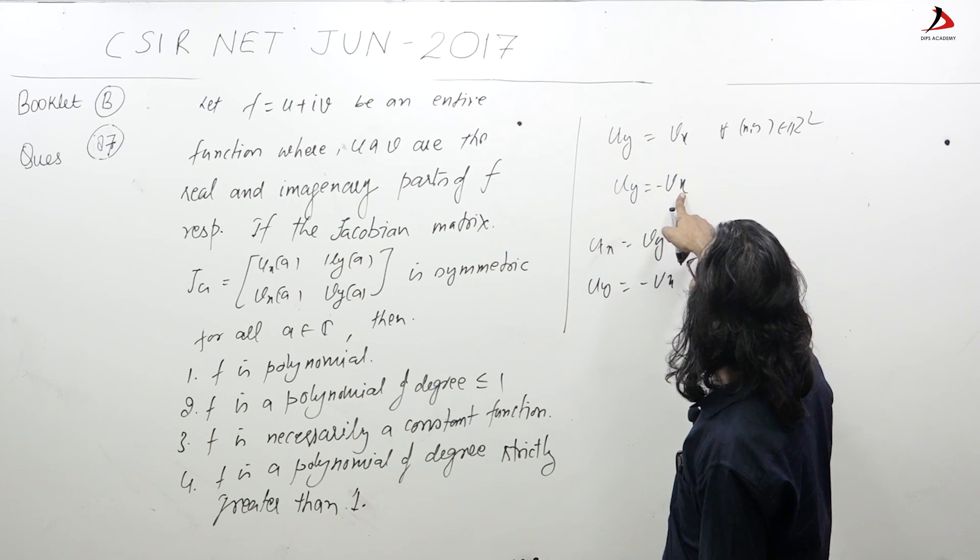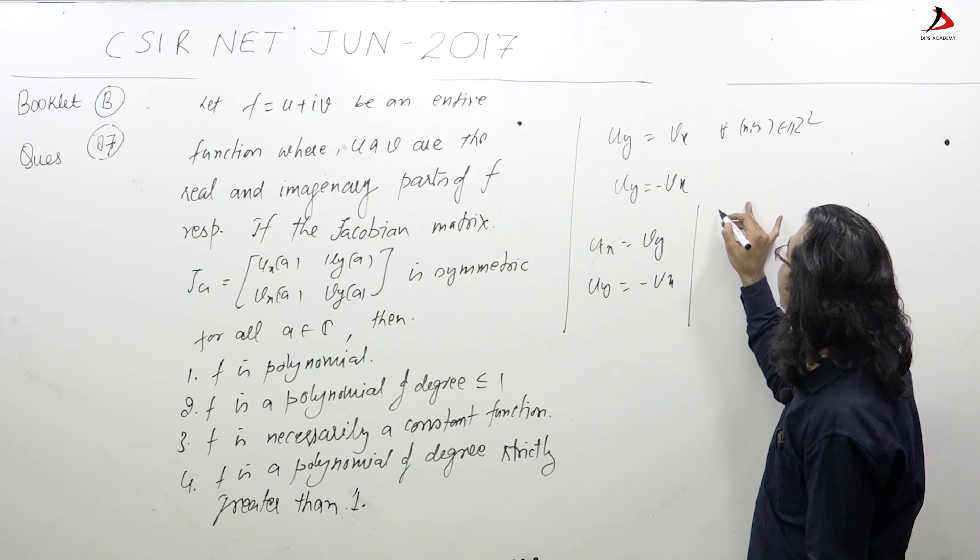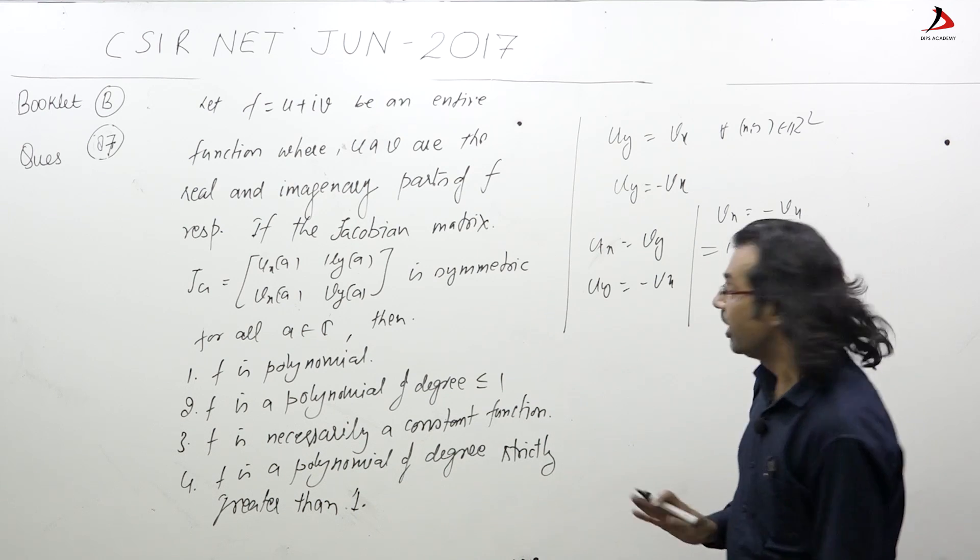So here v_x equals minus v_x. This implies v_x equals 0.